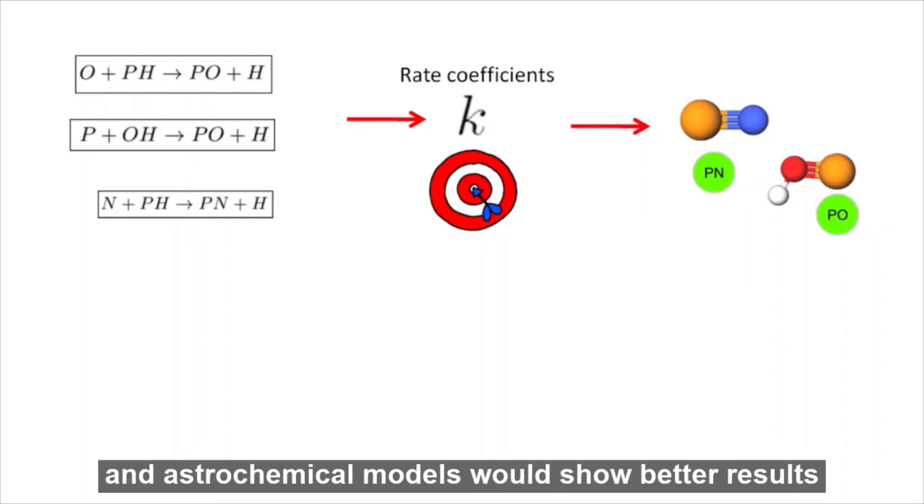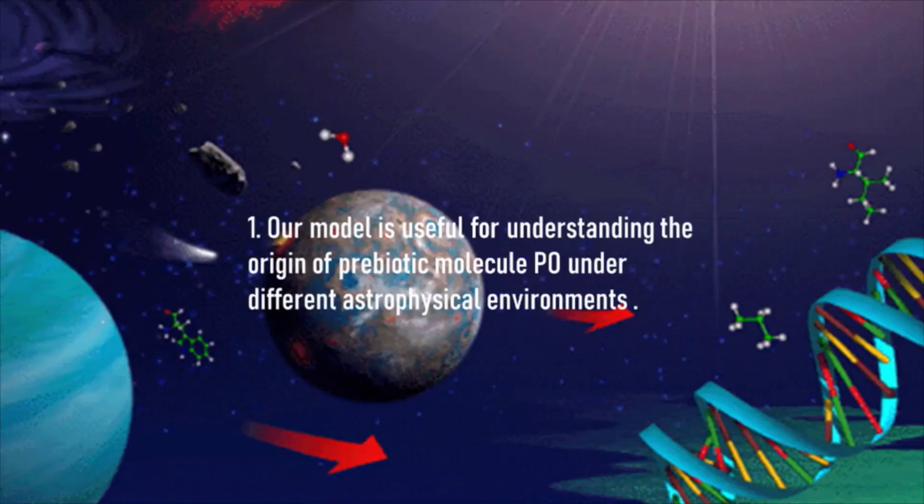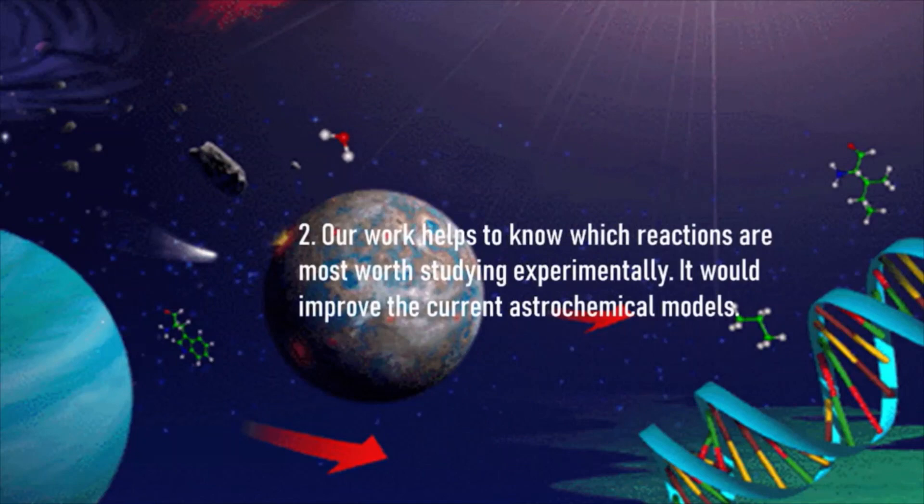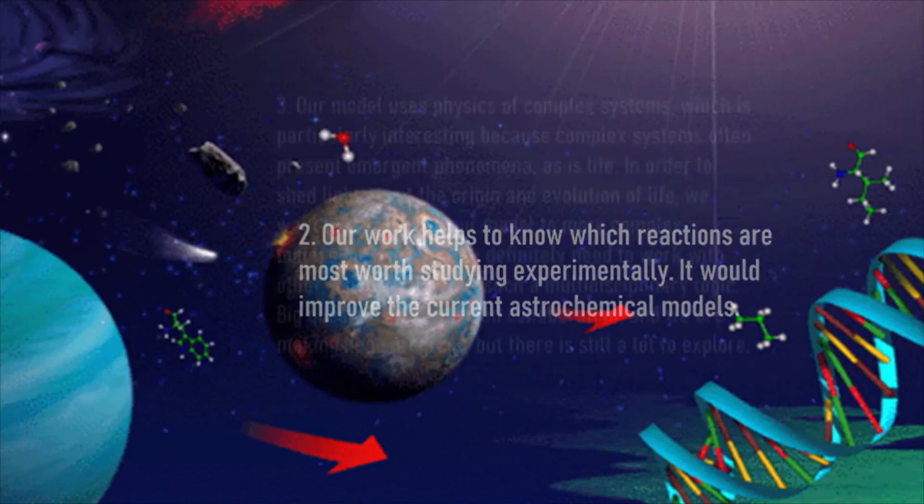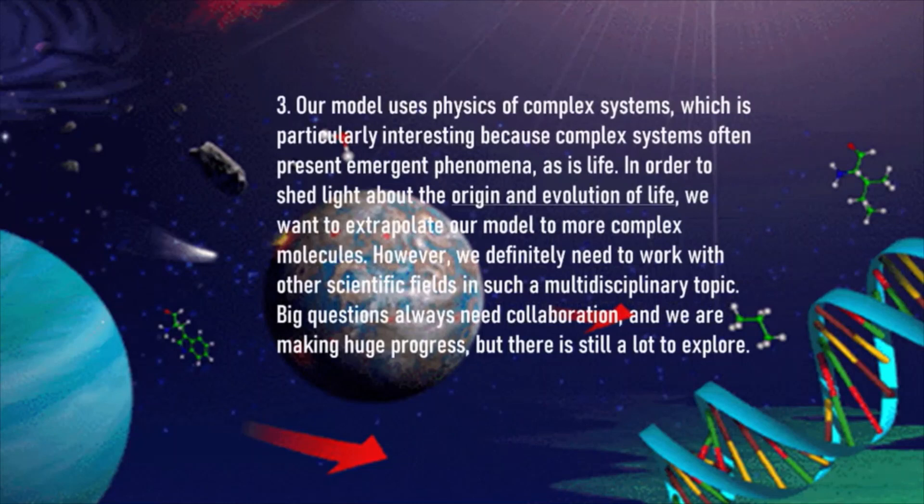I know it's been a lot of information, but there is only a few things I want you to grasp from this talk. First, our model is useful for understanding the origin of prebiotic molecule PO under different astrophysical environments. In addition, our work helps to know which reactions are most worth studying experimentally. It would improve the current astrochemical models. And, our model uses physics of complex systems, which is particularly interesting because complex systems often present emergent phenomena, as is life. In order to shed light about the origin and evolution of life, we want to extrapolate our model to more complex molecules. However, we definitely need to work with other scientific fields in such a multidisciplinary topic. Big questions always need collaboration, and we are making huge progress, but there is still a lot to explore.